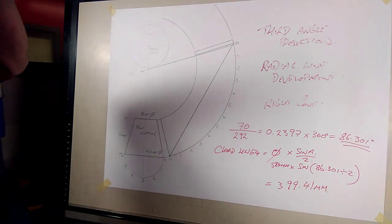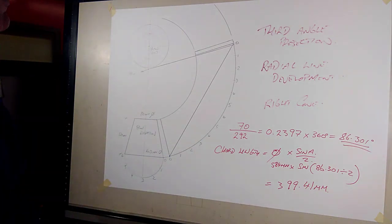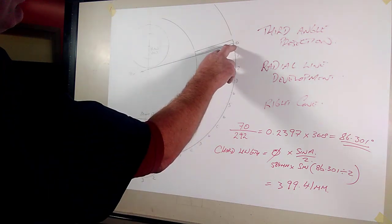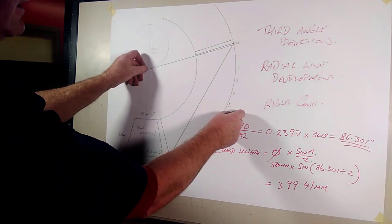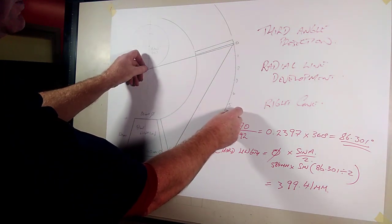But you should be able to understand that if you do the chord length, you can get a really accurate dimension, provided that this was exactly at 292 millimeters.